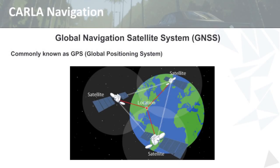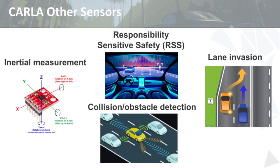Another source of information autonomous vehicles rely on is navigation systems. The Global Navigation Satellite System consists of a constellation of satellites that allow devices on Earth's surface to estimate an accurate latitude and longitude position. GNSS is often known in the English-speaking world as GPS, but that's specifically the US system — other countries like China and Russia have their own systems under different names. CARLA provides a simulation of this navigation system and also an inertial measurement unit like an accelerometer.